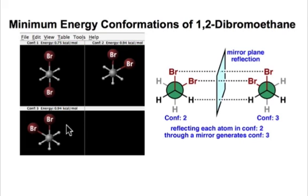We know that each of these are minimum energies because we can see that each one is a staggered conformation as opposed to an eclipsed conformation. And we know from what we talked about in the last webcast that the staggered conformations are minima on our potential energy diagram.